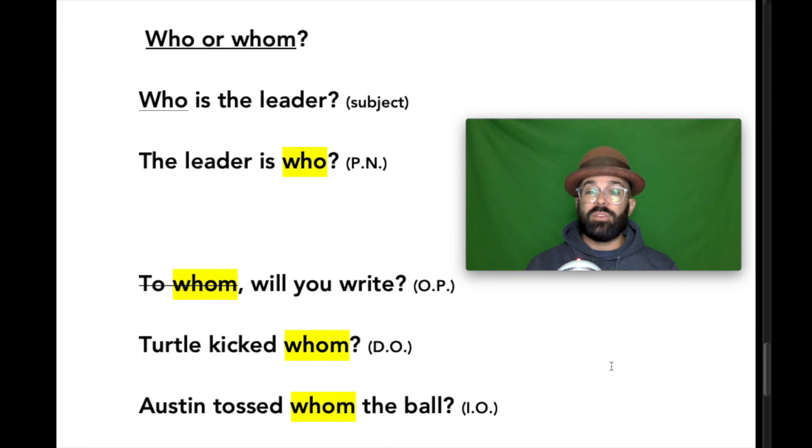So if it's going to be, once again, the subject or the predicate nominative of the sentence, you have to use who. But if it's going to be an object of a preposition, a direct object, an indirect object, then it would be whom.